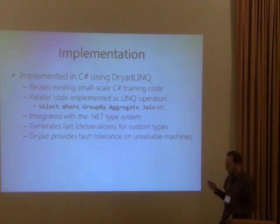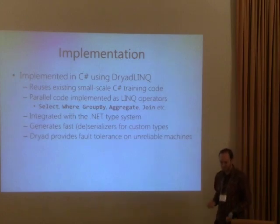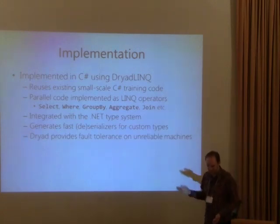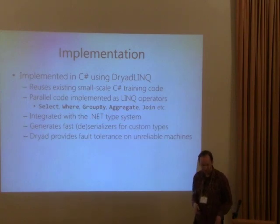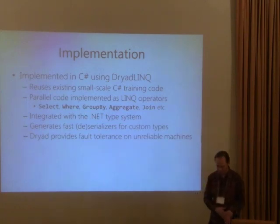The underlying Dryad system provided automatic fault tolerance within a job, able to deal with transient crashes and network outages, which were fairly common given that we were using commodity machines for testing.